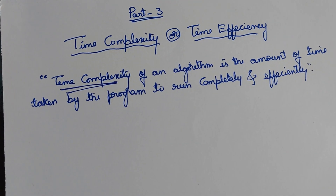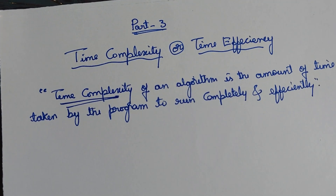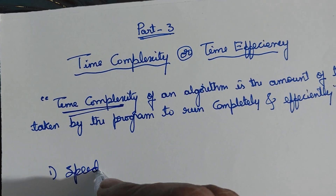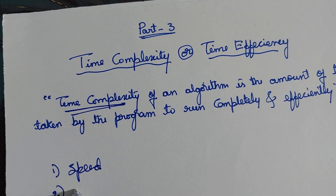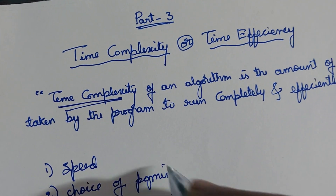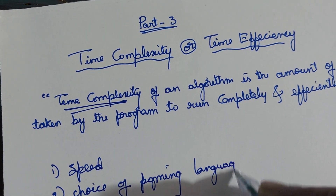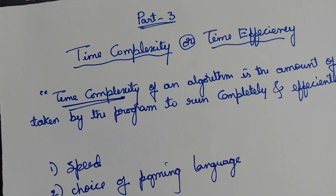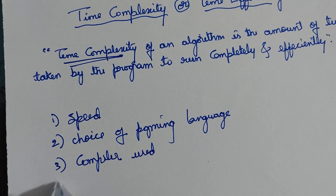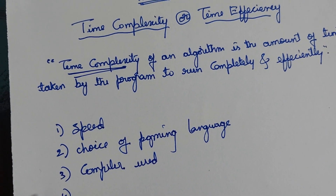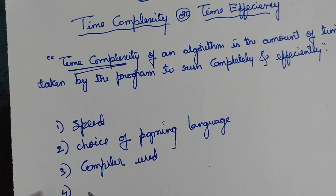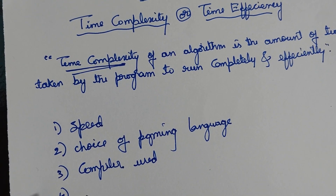The time complexity of any algorithm depends on totally six factors. Those six factors are: speed of the computer, choice of programming language, compiler used, choice of algorithmic design technique, number of inputs or outputs, and size of inputs and outputs.